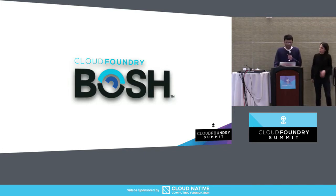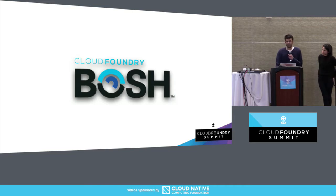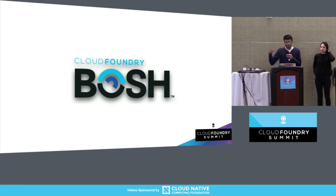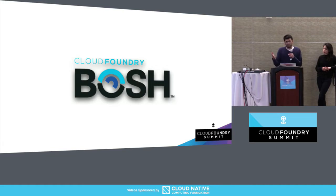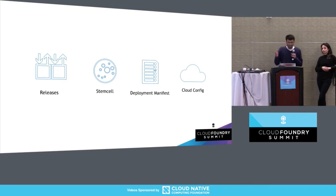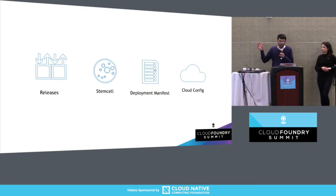BOSH is a release engineering toolchain used to ship many complicated systems. While tools like Chef or Puppet allow you to ship a fully configured server in a reproducible way, the main USP of BOSH is that it allows you to ship fully configured clusters in a reproducible and consistent way. BOSH works in a director model — it lives in an orchestration VM and can provision clusters and monitor them. As an operator deploying software with BOSH, you need to provide four pieces of information: releases, stemcells, a deployment manifest, and a cloud configuration.